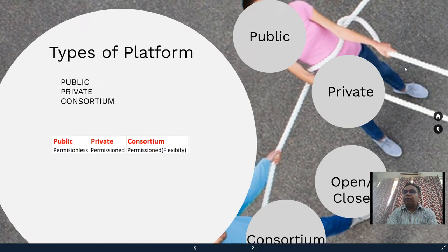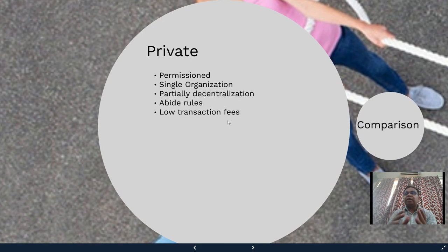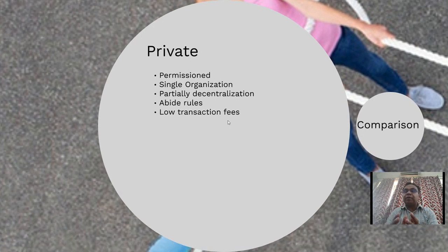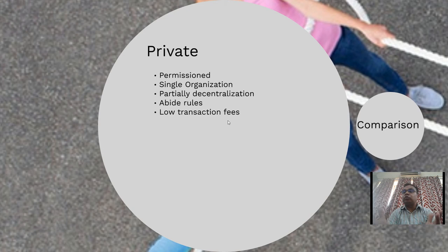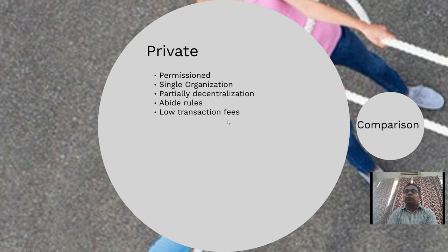Moving forward to a private blockchain platform: as a public platform is permissionless, a private blockchain platform is permissioned. Permissioned means the platform is controlled by a single organization. Because a single organization has control, there are concerns that it may change or delete blocks. Therefore, it is said to be partially decentralized — not fully decentralized — because a single organization has control over it.